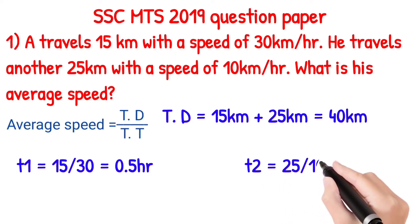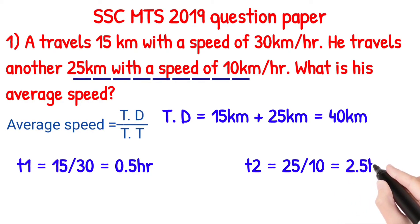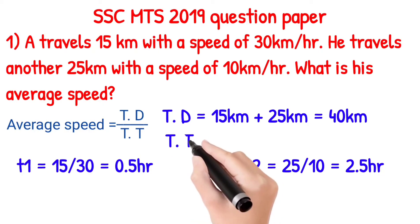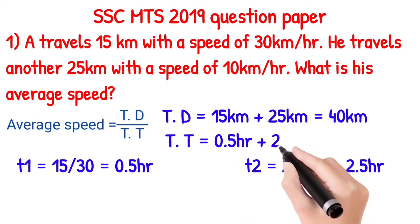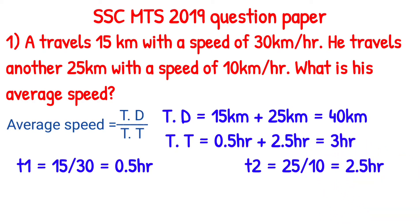For T2, distance is 25 divided by speed 10, so 25 by 10 is equal to 2.5 hours. Total time is T1 plus T2. So total time is equal to 0.5 hours plus 2.5 hours, which gives us 3 hours.